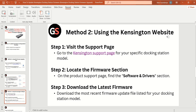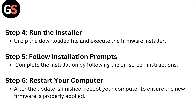Step 3: Download the Latest Firmware — download the most recent firmware update file listed for your docking station model. Step 4: Run the Installer — extract the downloaded file and execute the Firmware Installer.